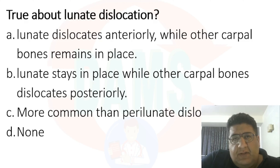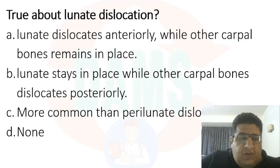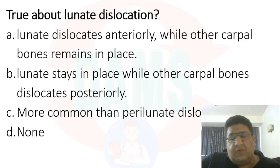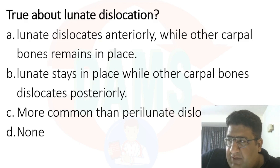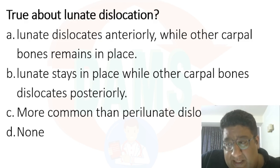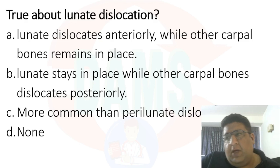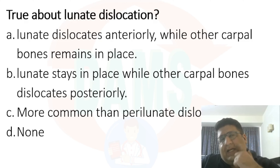How many carpal bones do we have? Eight. What are their names? Scaphoid, lunate, triquetral, pisiform, trapezium, trapezoid, capitate, hamate. Which of these eight is the most common carpal bone fracture? I'm sure most of you guessed it right — it's scaphoid. And if I ask which is the most common carpal bone to get dislocated, most of you guessed it right as well — it is lunate.